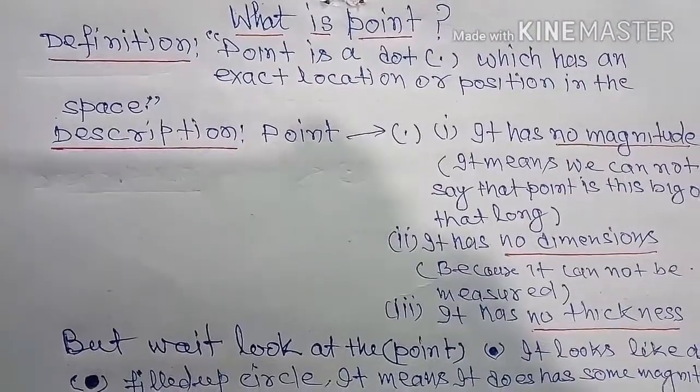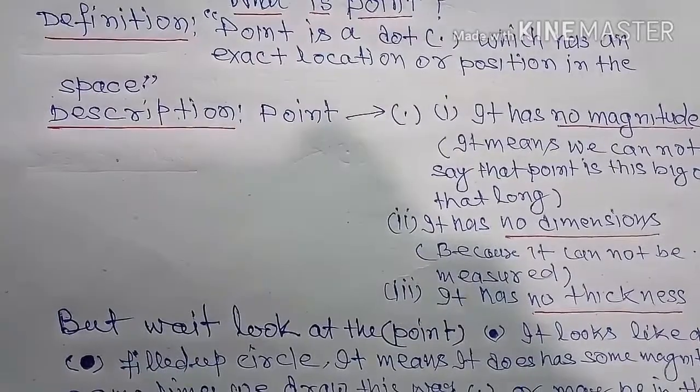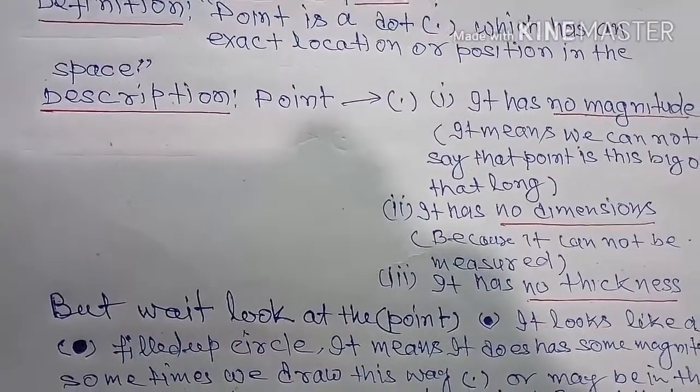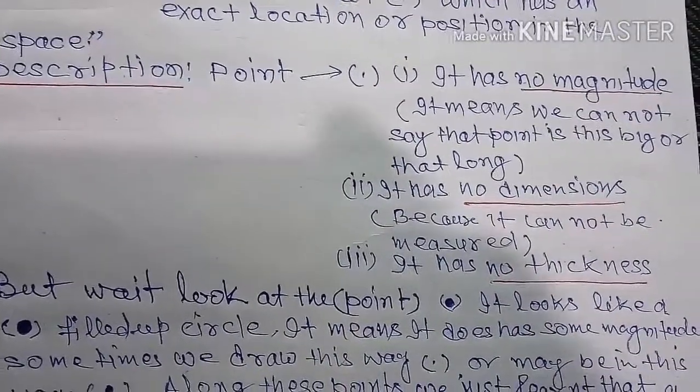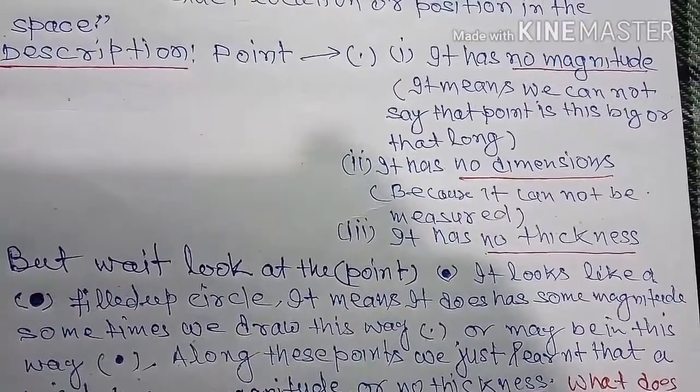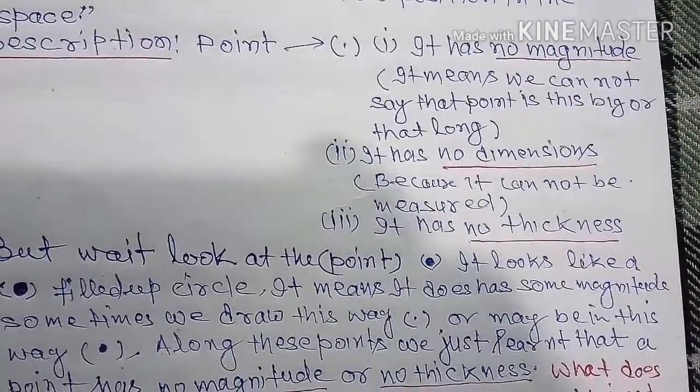But let's look at this point. It looks like a filled up circle. It means it does have some magnitude. Sometimes we draw this point this way or maybe in this way.